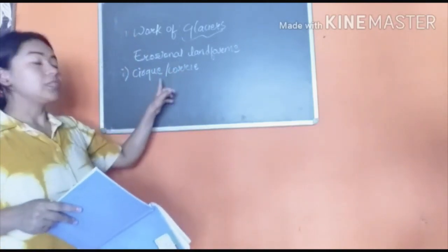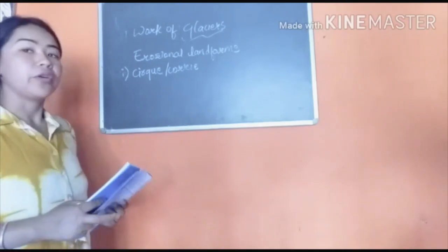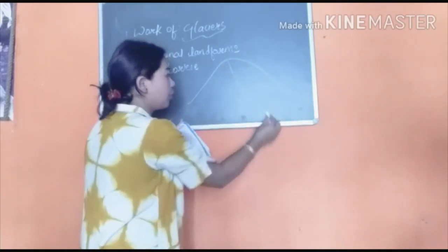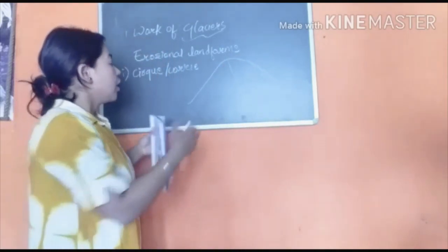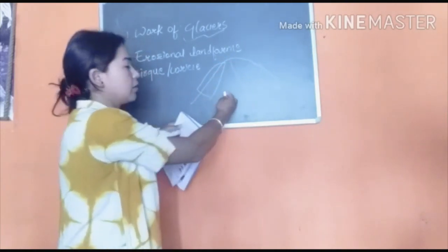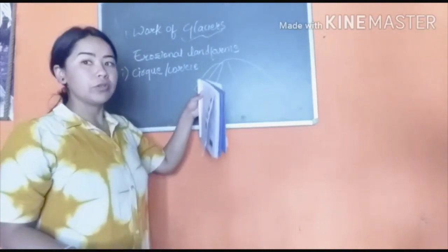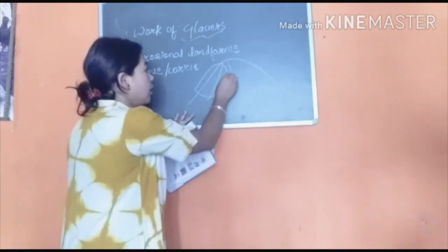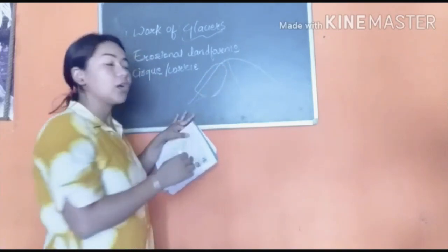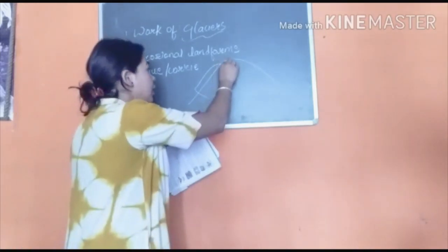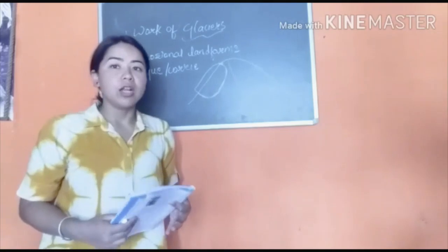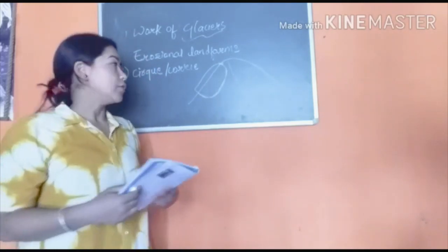The first erosional landform is the cirque, also called a corrie. Suppose this is a mountain — glaciers are present here. When these glaciers move downwards, erosion is performed in this area, and with time this place acquires the shape of an armchair. This type of armchair-like structure on the slope of a mountain or valley is known as a cirque.